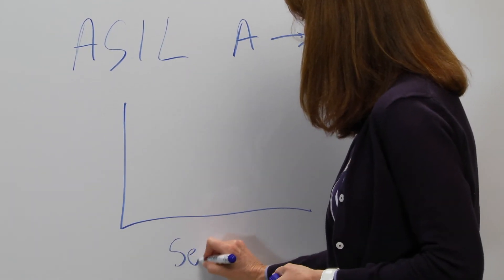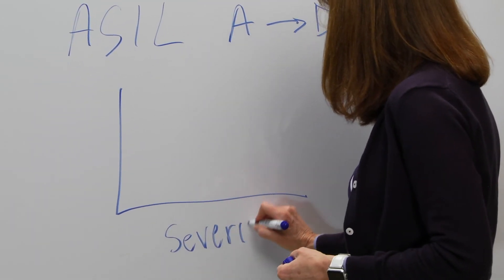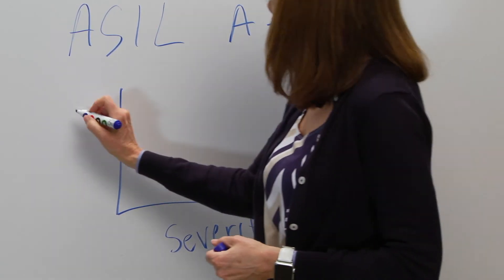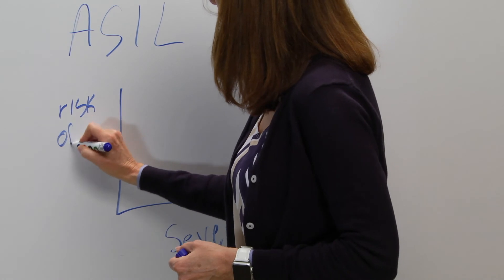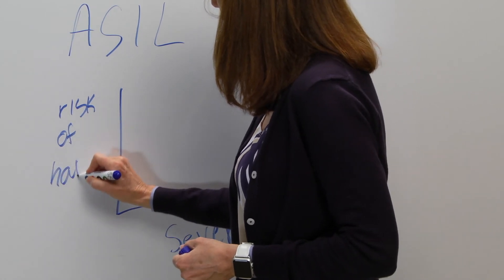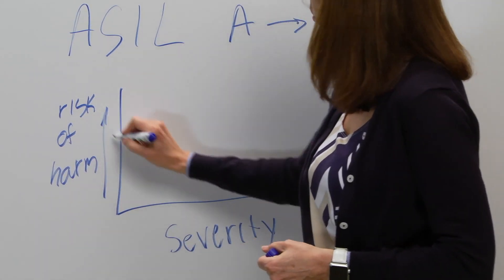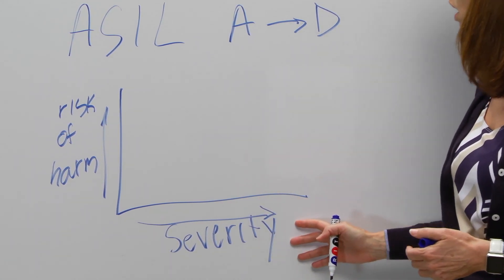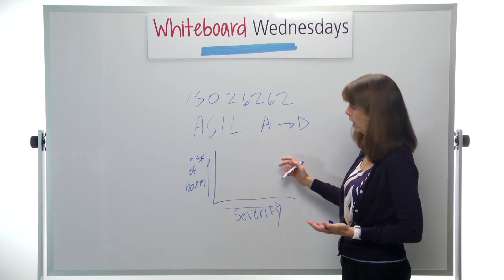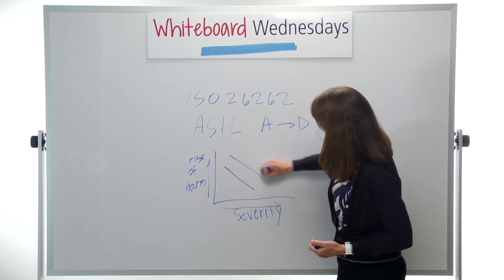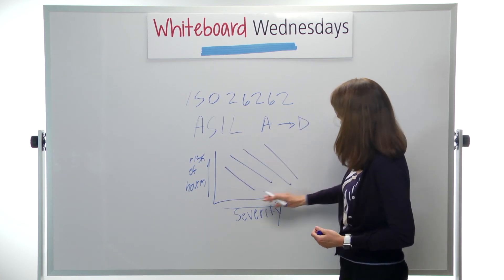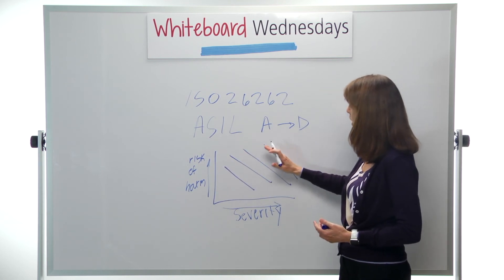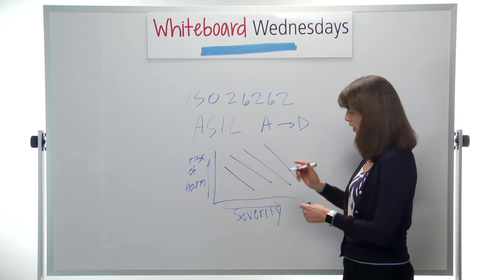Basically where that A to D comes from, those levels, there's two axes in terms of automotive safety. There's the severity of a potential injury, and then the risk of harm. And as the risk of harm goes up and the severity goes up, then things become more catastrophic. So you could draw lines this way and say these are ASIL A, ASIL B, ASIL C, ASIL D, in terms of their level.